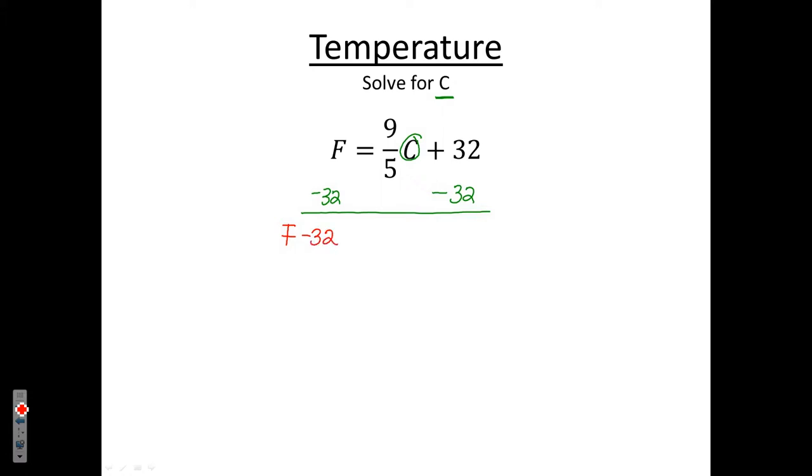Bring down your equal sign. And then on the right-hand side, you're still left with 9/5 C. And 32 minus 32 cancel out. The whole purpose was to remove that addition or subtraction piece first. Now, still trying to solve for the C, which is here.